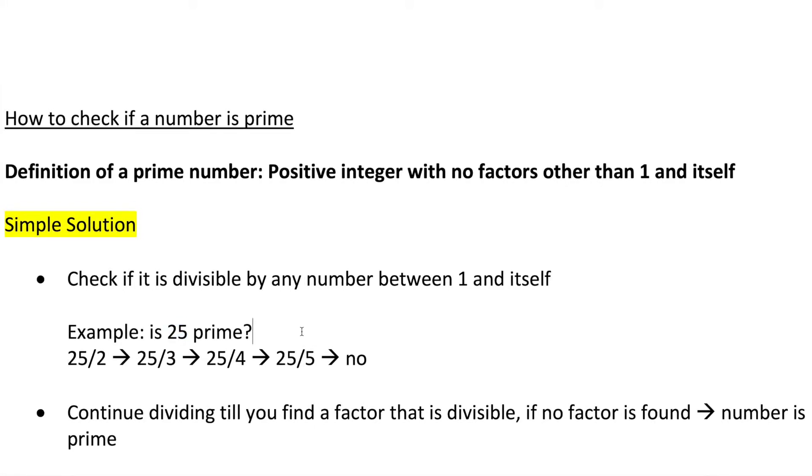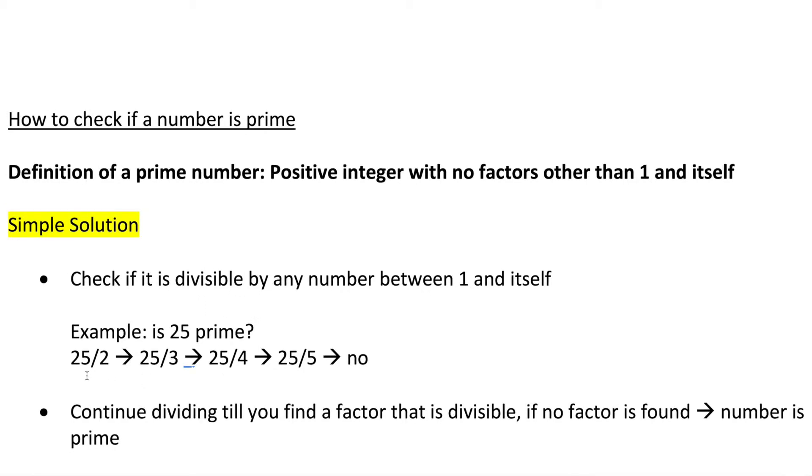For example, if we wanted to check if 25 is prime, we're going to check if it is divisible by any number between 2 and 24. 25 isn't divisible by 2, 3, or 4, but it is divisible by 5. So that means that this is not a prime number.